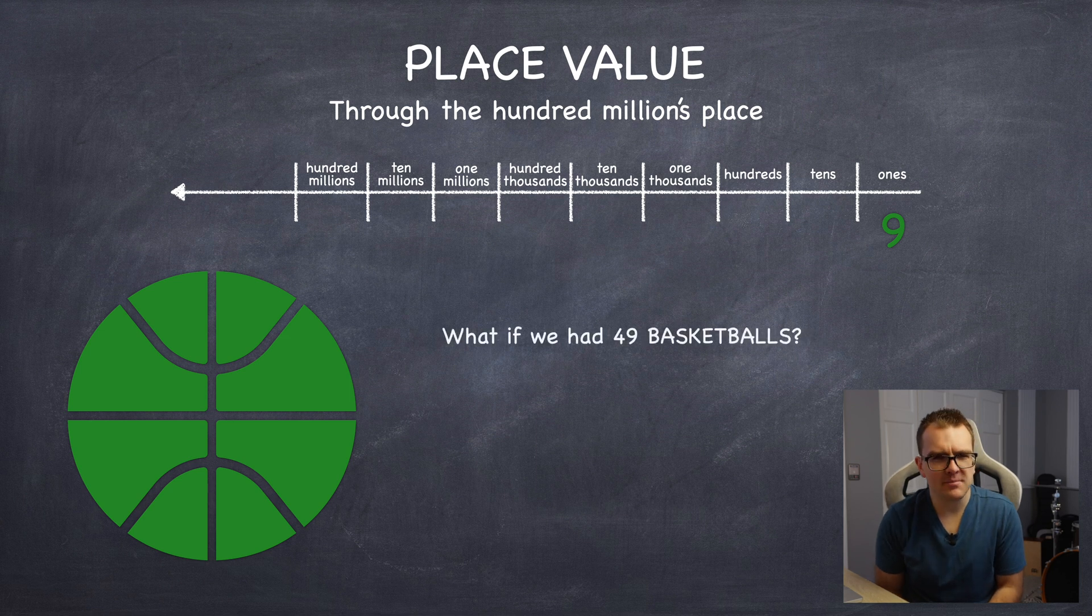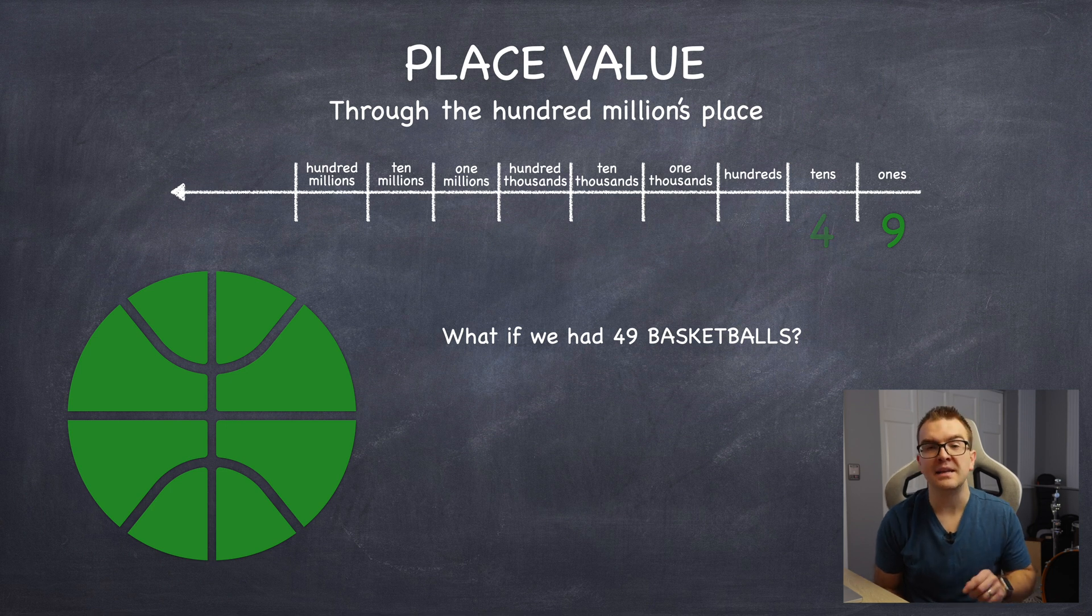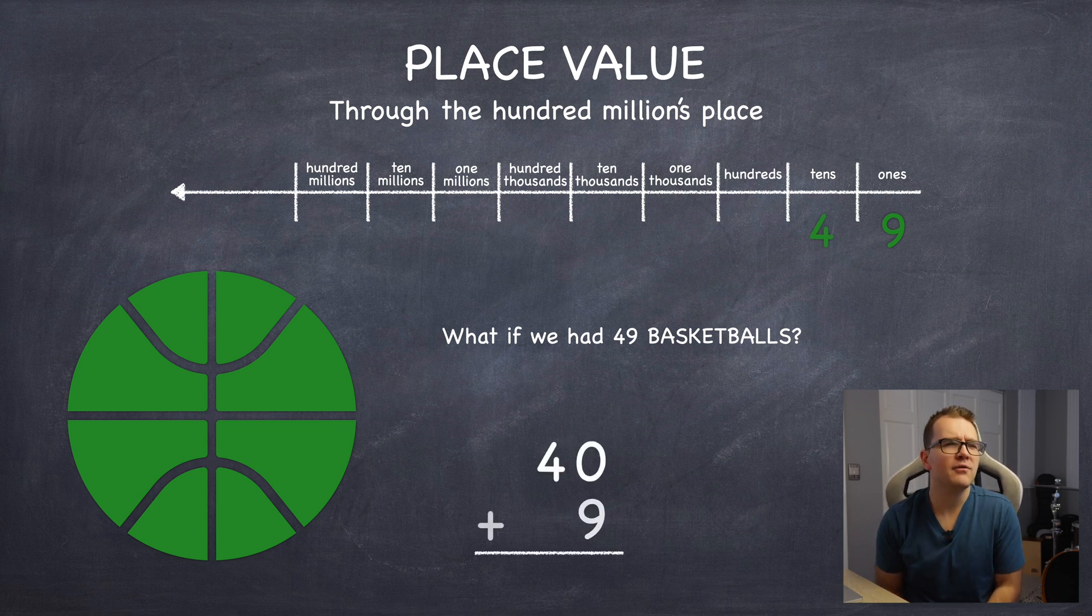But what if we had 49 basketballs? If we were to place 49 in our place value chart, four would go in the tens place and nine in the ones place. You can also think of it like four groups of 10 with nine groups of one, or just 40 plus nine.